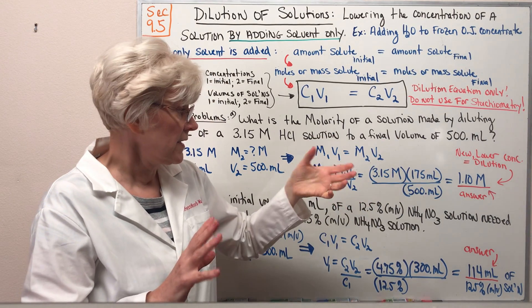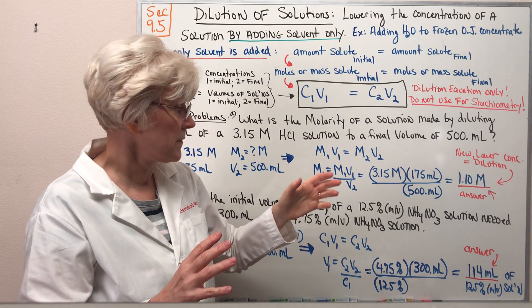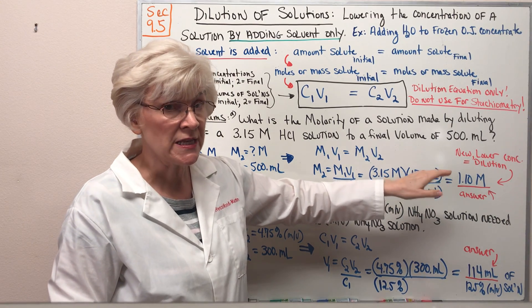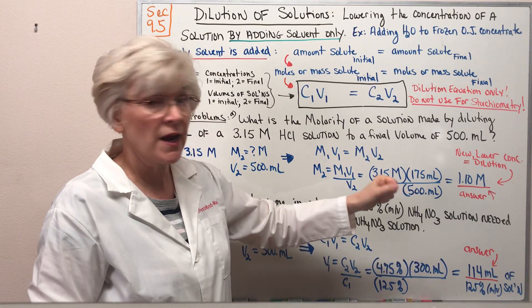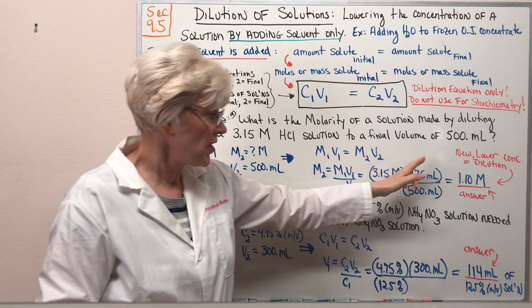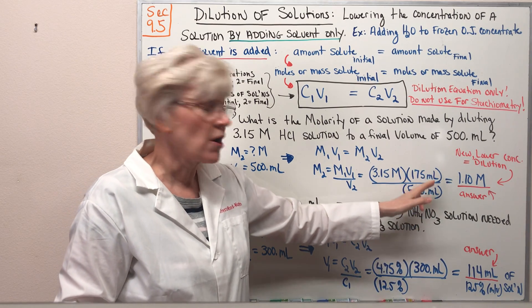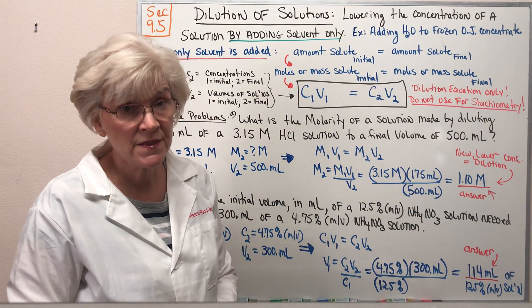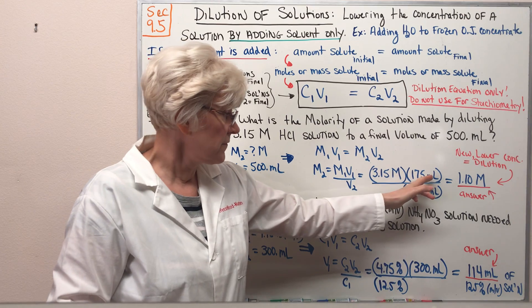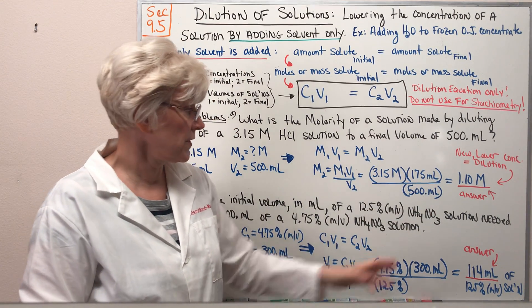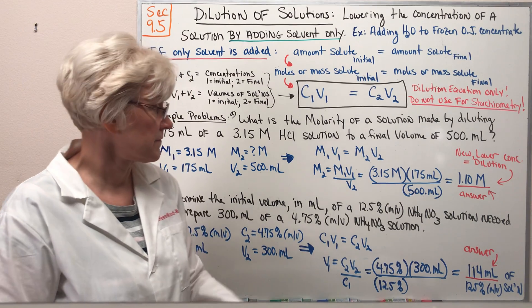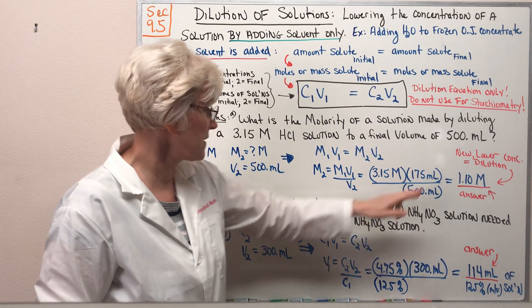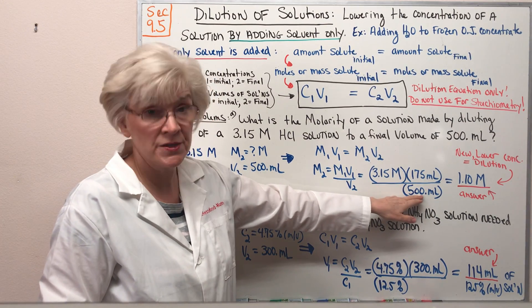Now I'll pause here to address a question some of you may have. Wait a minute, don't we have to change volume from milliliters into liters if we were trying to get a mole amount? And that is true. But notice this is a dilution calculation and our volume units are going to cancel. So it doesn't matter that we've left them in milliliter units. The V1 and V2 units of volume milliliters will cancel out. So our M1 is 3.15 M, our V1 is 175 mL, and our V2 is 500 mL.